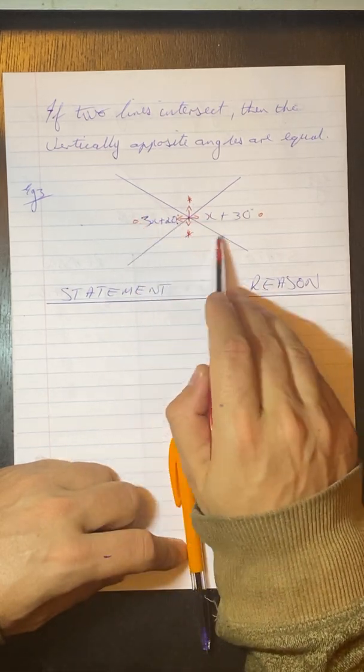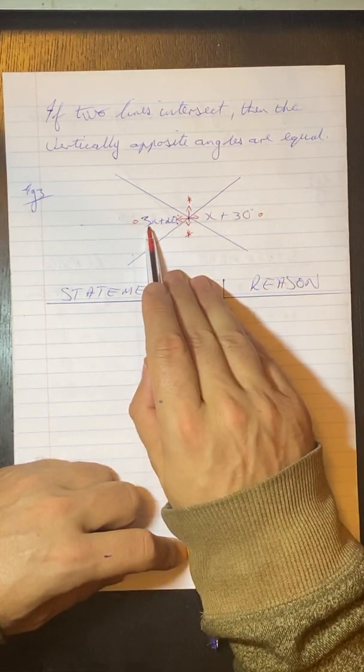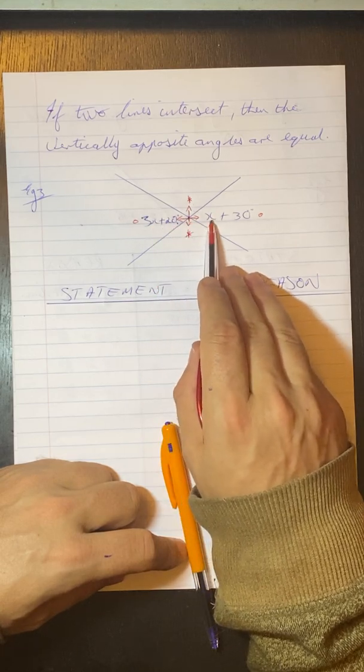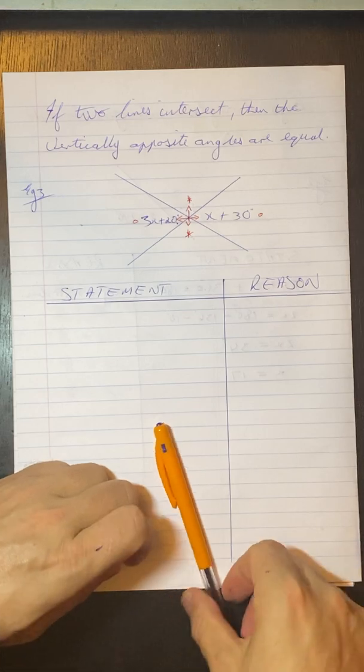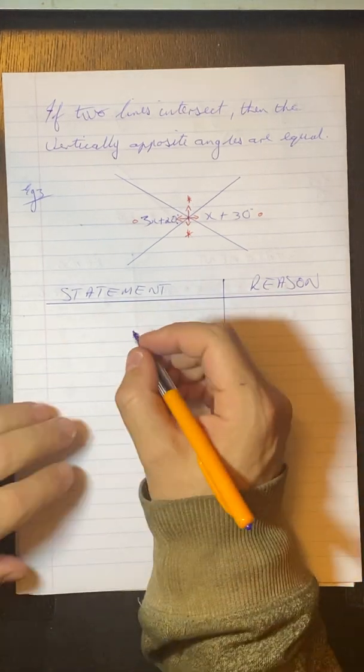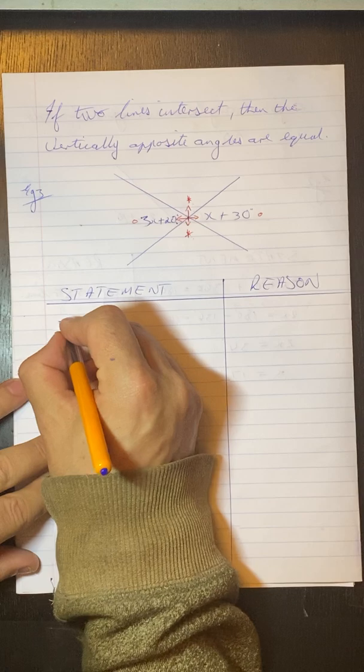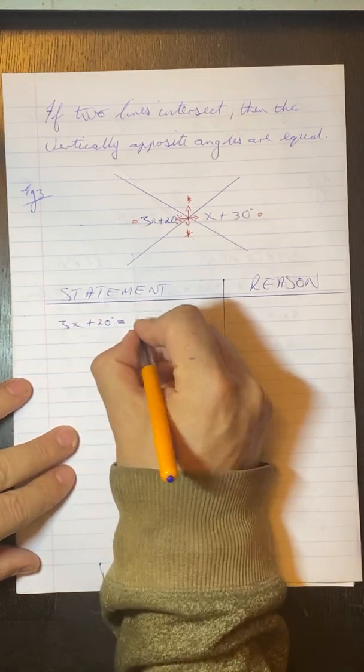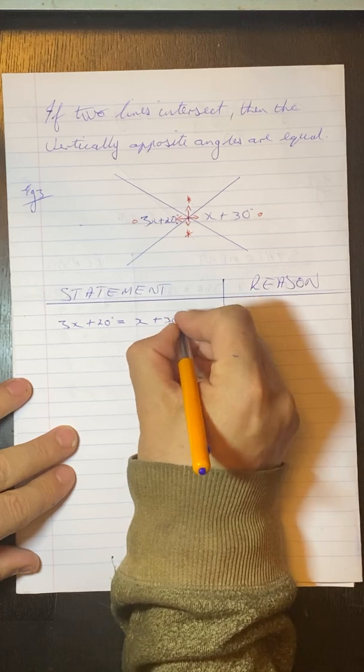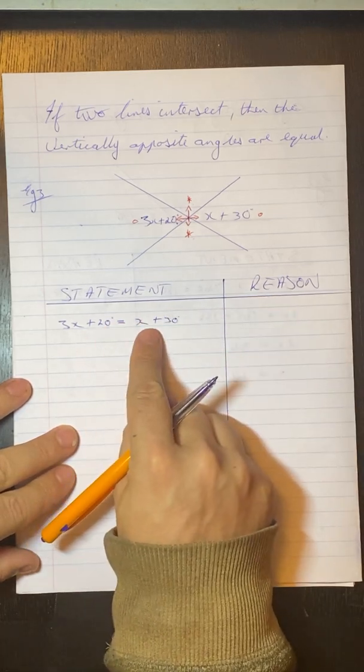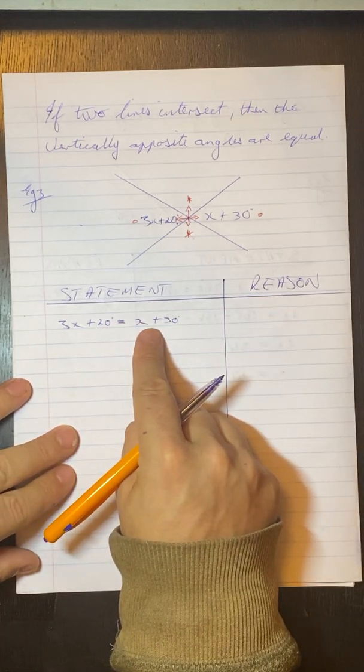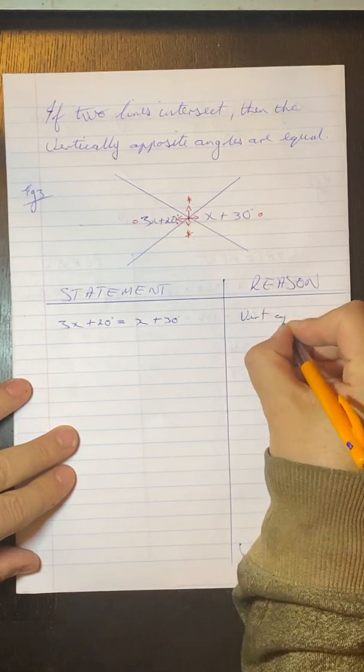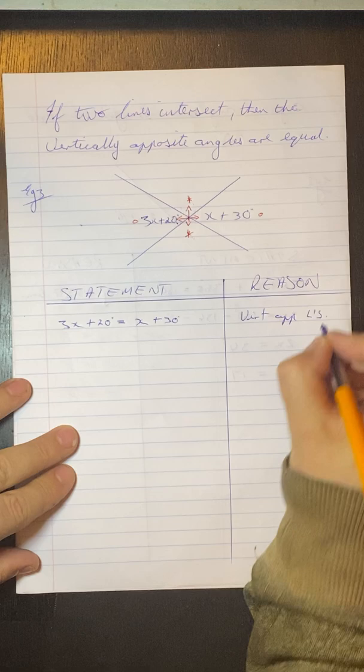So if we look at the example that we have here, we know that 3x plus 20 will be equal to x plus 30. So if we set that up, we've got 3x plus 20 is equal to x plus 30. I've taken my two vertically opposite angles and set them equal to each other. My reason for this is vert-op angles.